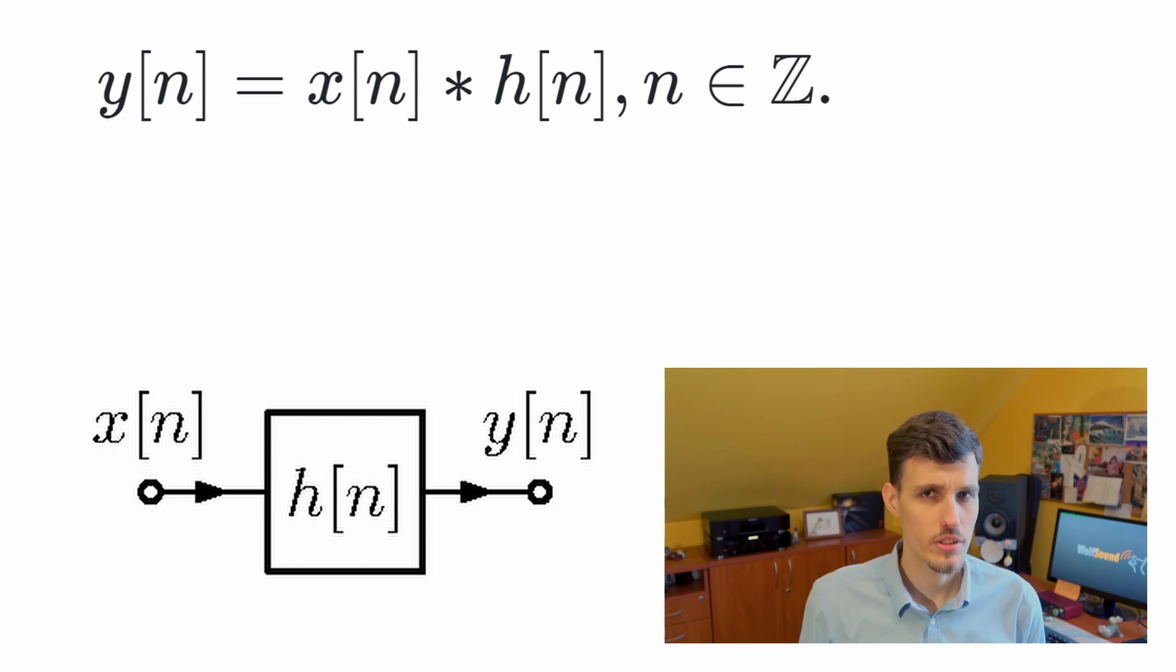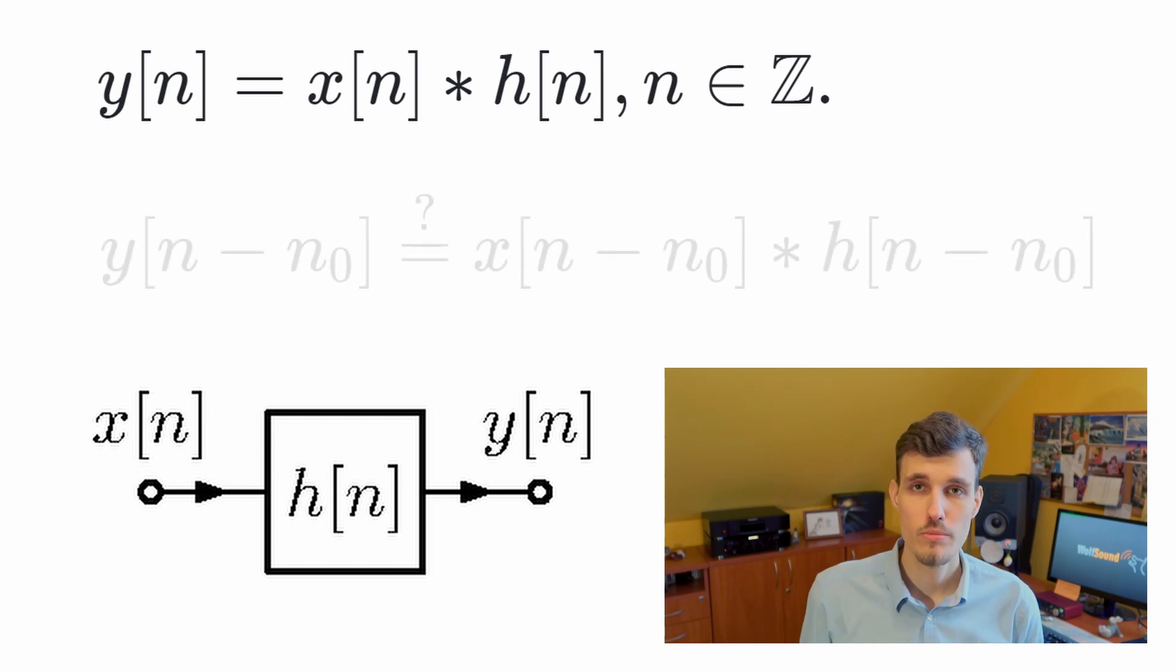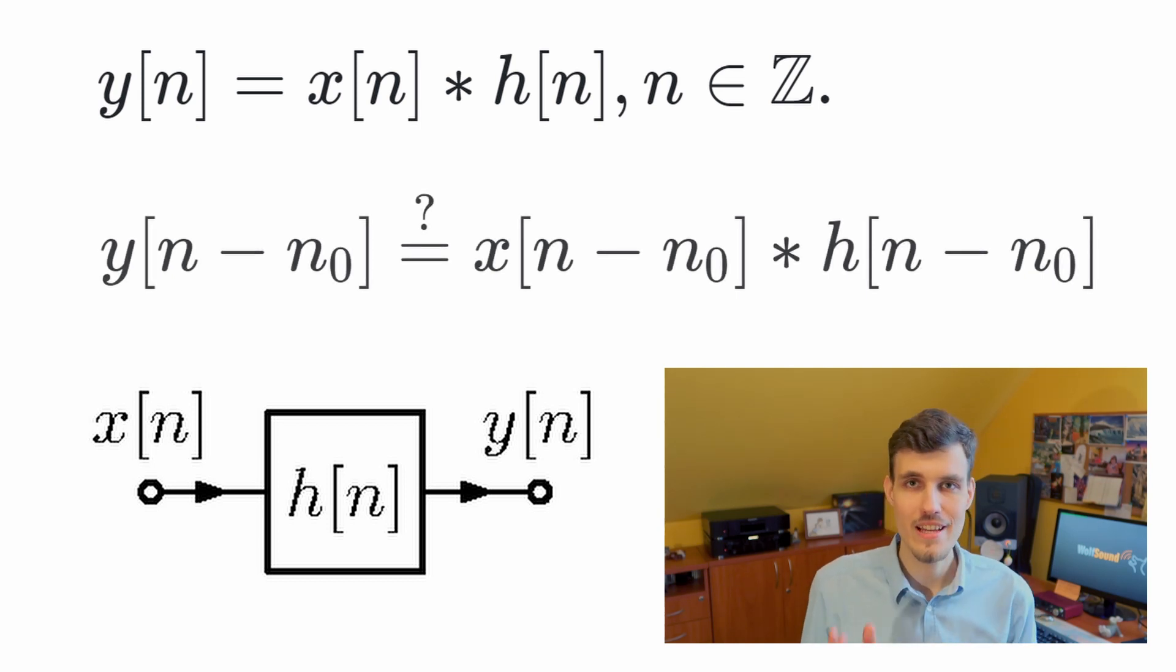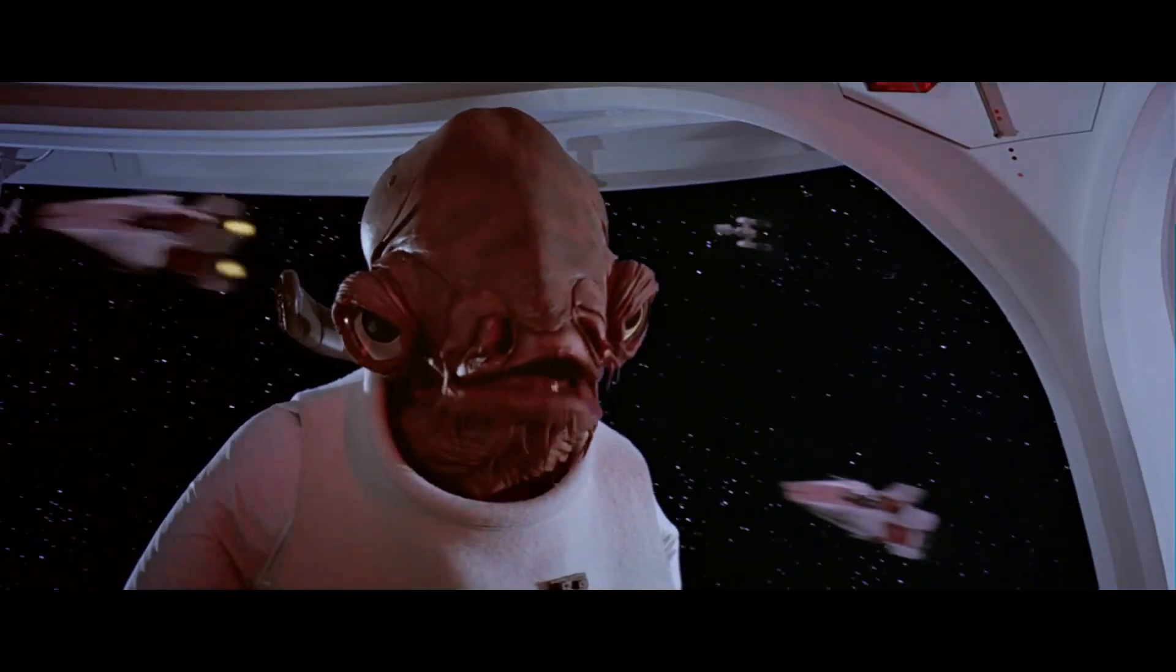Now, what if we wanted to obtain a delayed version of the output? A natural move would be to substitute the argument of y and subsequently the arguments of x and h. But it's a trap!